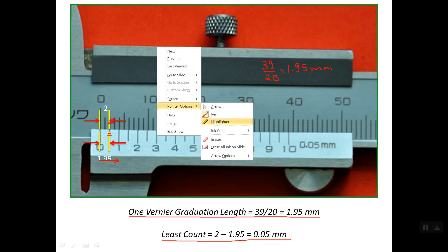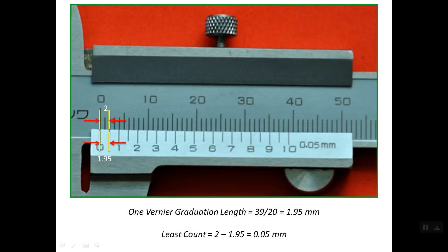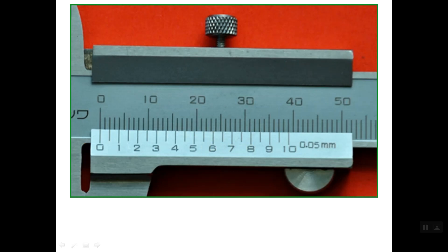One can ask: if the length of the Vernier scale instead of being 39 becomes 40, what will happen? In this case it will be 40 divided by 20, which gives a division length of 2 mm. So what happens in this case? Instead of being 1.95 mm, this length becomes 2 mm.